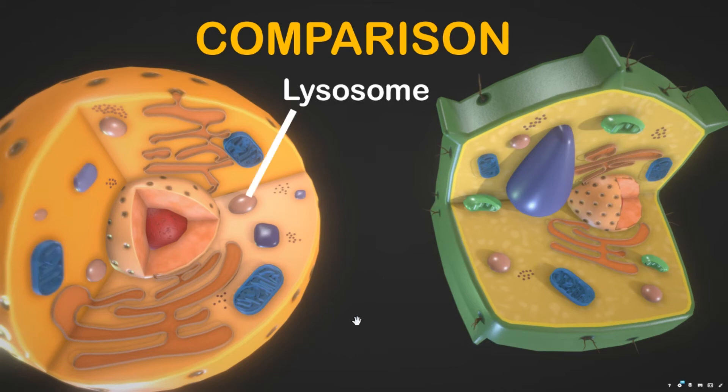Lysosomes are found in nearly every animal cell. They are common in animal cells because when animal cells absorb food, they need the enzymes found in lysosomes to digest and use the food for energy. On the other hand, lysosomes are not commonly found in plant cells because plant cells have cell walls that are tough enough to keep out large or foreign substances that lysosomes would usually digest.